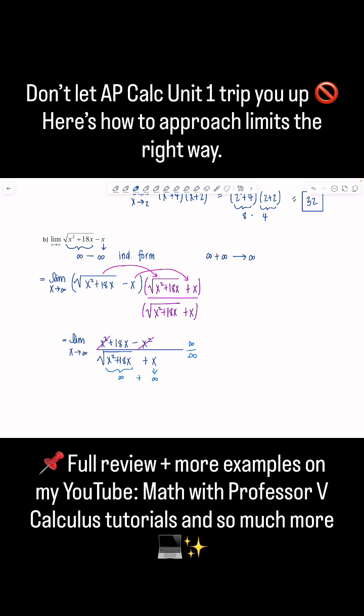And you might be like, Professor V, we still have an indeterminate form. I don't think you made things better. No, no, but we did. So when you have infinity over infinity, what we can do is divide by the highest power of x that's in the denominator.